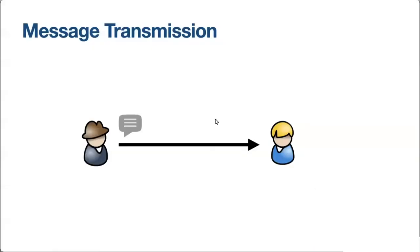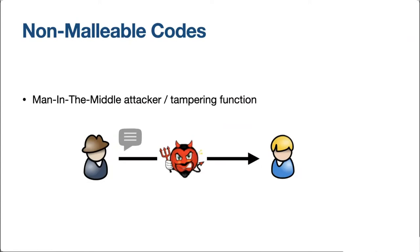The problem we'll be talking about is really simple. It's just two parties: a sender and a receiver. The sender wants to transmit a message to the receiver. What makes the problem challenging is that we consider a man-in-the-middle attacker, or a tampering function, that sits on the channel, intercepts all messages from the sender, inspects them in any way it wants, and then outputs a possibly different message to the receiver.